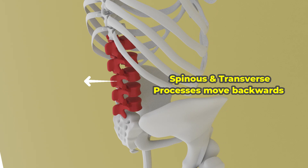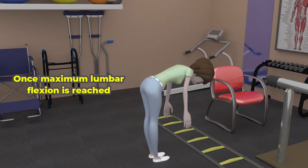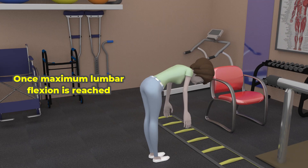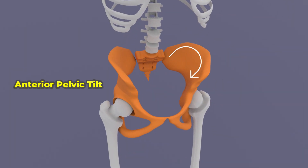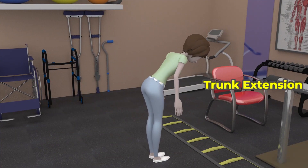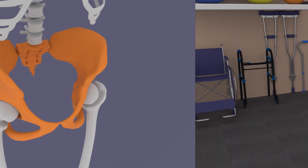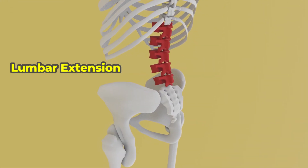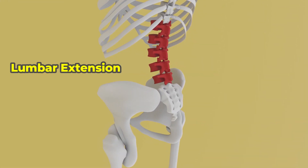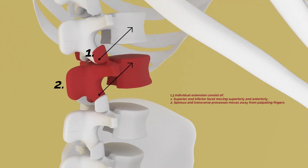Once maximum available lumbar flexion motion is reached, the pelvis tilts anteriorly at the hips. Coming back to erect posture results in posterior pelvic tilt first, followed by lumbar extension, where each lumbar superior and inferior facets move superiorly and anteriorly.